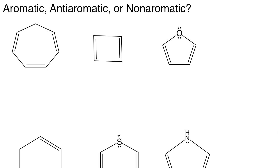Welcome to another Chem Complete episode. This is a continuation of the aromaticity lectures. Last time we discussed aromaticity in reference to three major rules or constraints to determine whether something is aromatic or not.